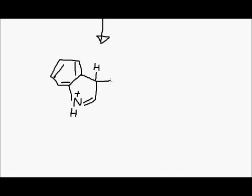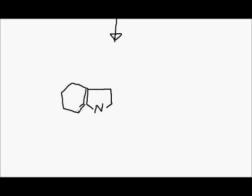Here's the intermediate halfway through the reaction. The nitrogen has added onto the oxaloyl chloride through the indole ring. Now a deprotonation returns us to a neutral nitrogen, and we have alkylated the indole ring in that position there with the oxaloyl chloride.